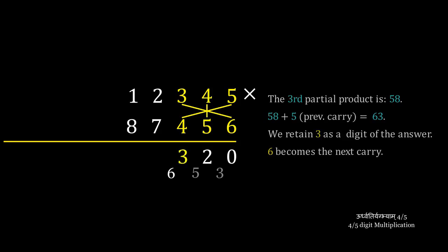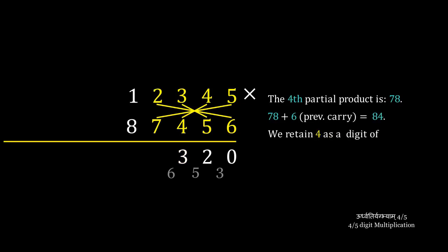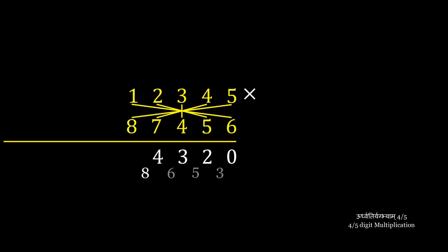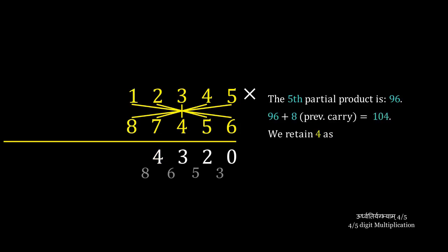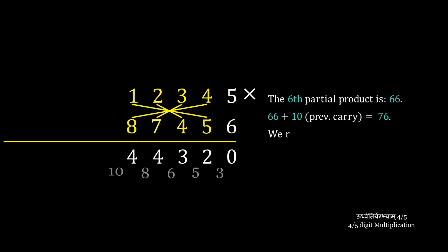The next partial product is a cross-multiplication of the last four digits, which gives us 78. We add the previous carry to get 84. We retain 4 as a digit and carry 8. The next partial product is a cross-multiplication of all the digits, which gives us 96. We add 8, the previous carry, to get 104. We retain 4 and 10 becomes the next carry. The sixth partial product is a cross-multiplication of the first four digits, which gives us 66. We add the previous carry. We retain 6 as a digit of the answer and 7 becomes the next carry.